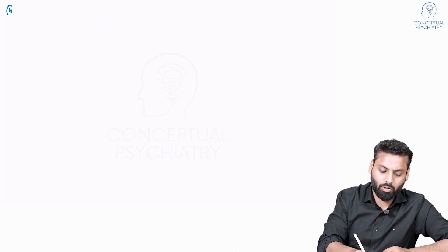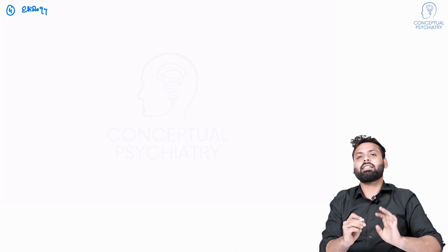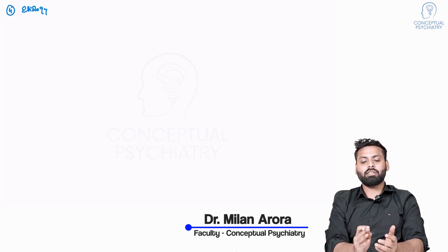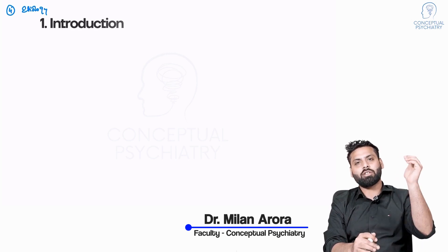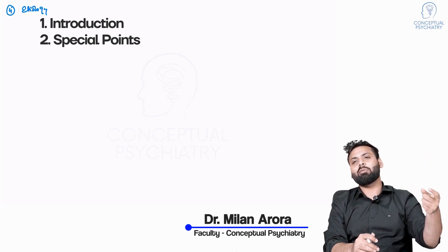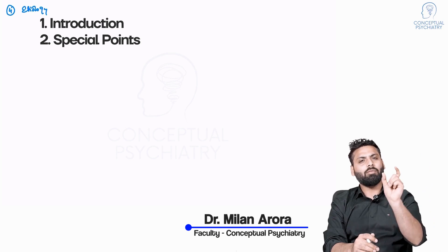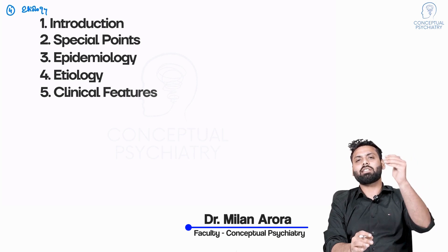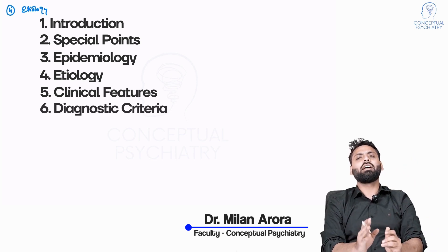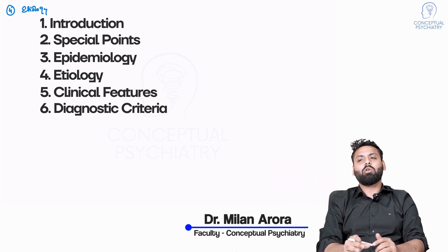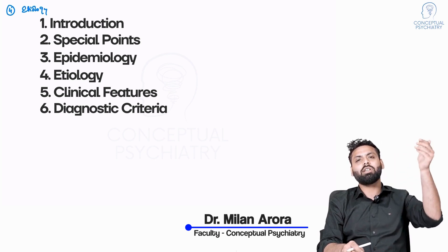Now comes the etiology part. The scheme for answer writing is a template. Every question begins with an introduction — then we may include a special point such as another name for the condition. The introduction is a basic one-liner definition. Then we come to epidemiology, then etiology, then clinical features and diagnostic criteria. In psychiatry, most of the time the clinical features are the diagnostic criteria — only the numbers differ, but the features are the same.